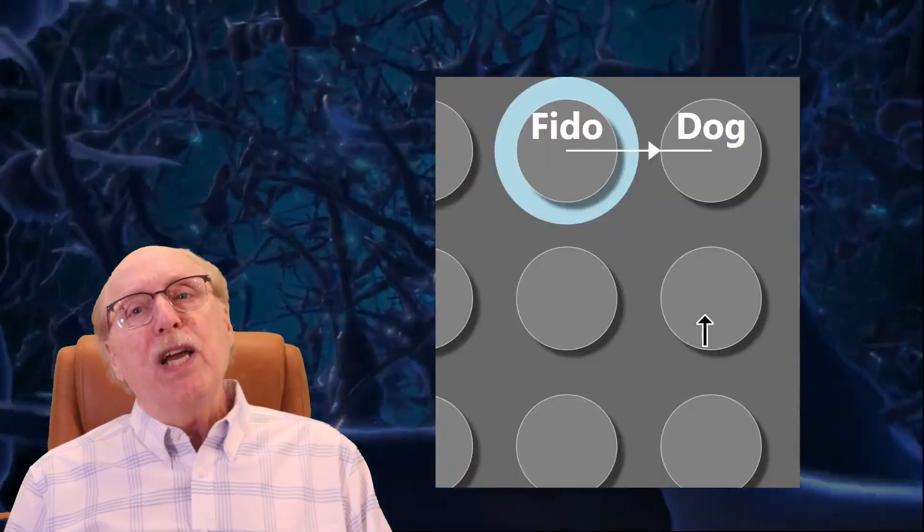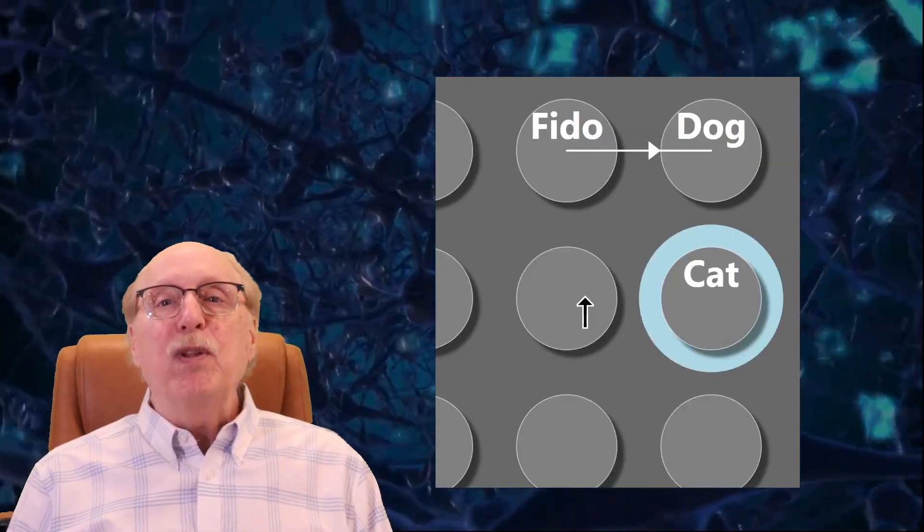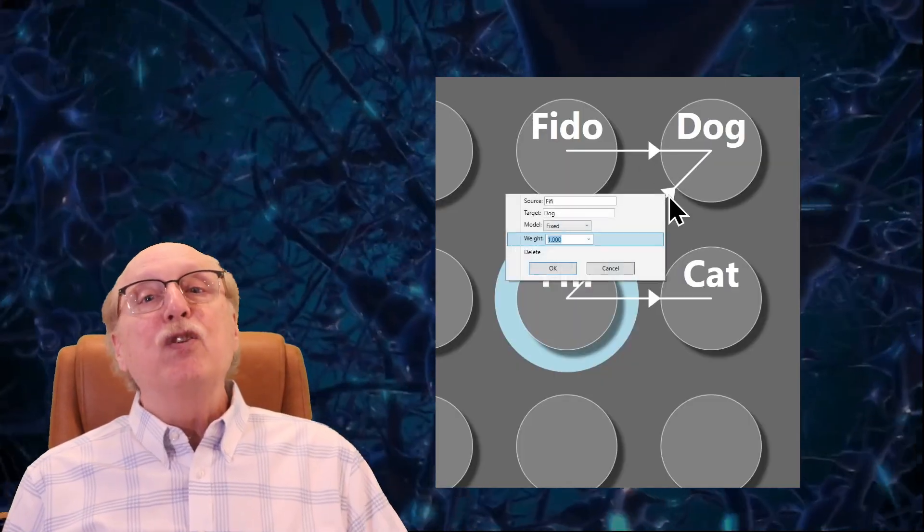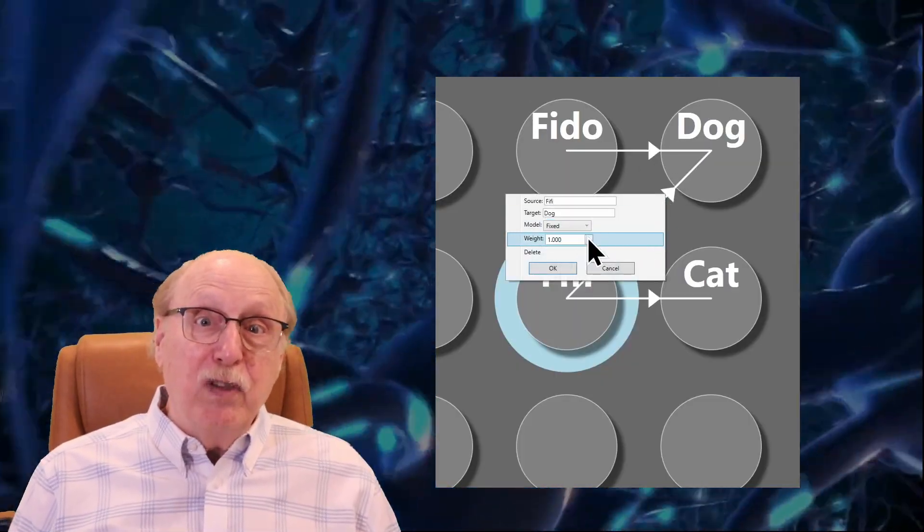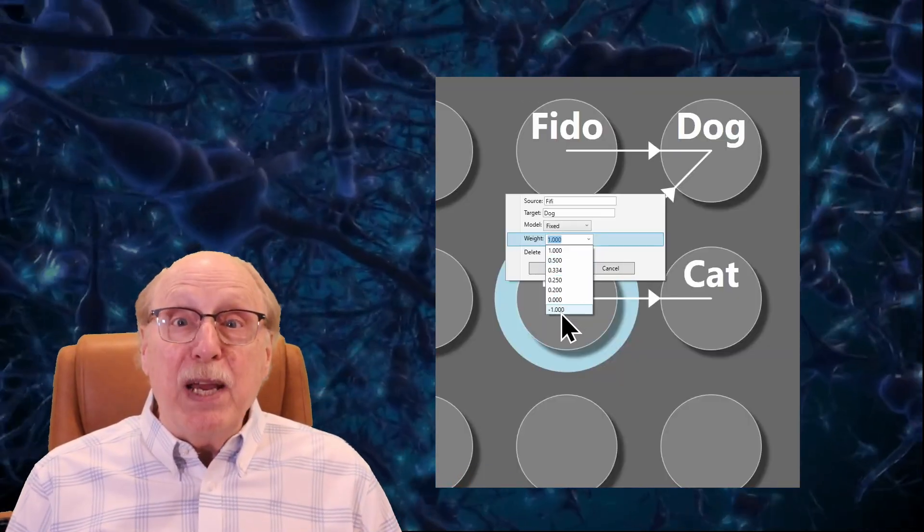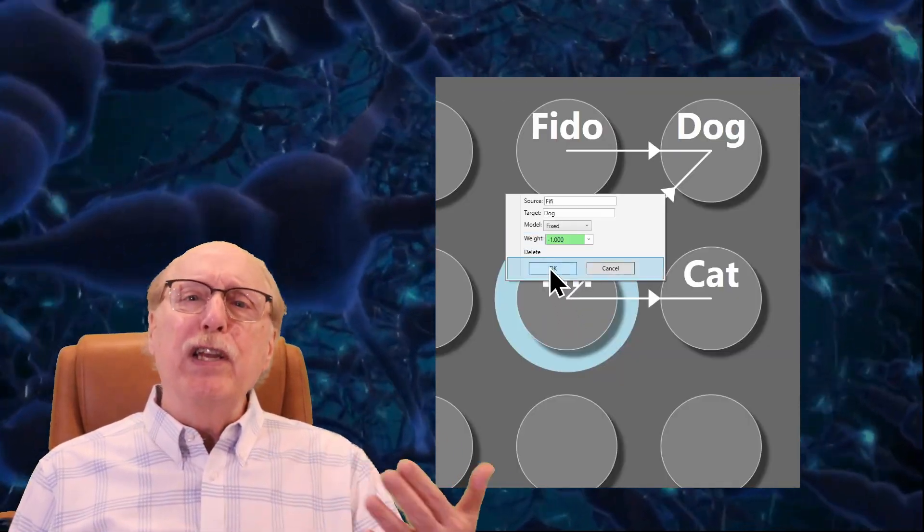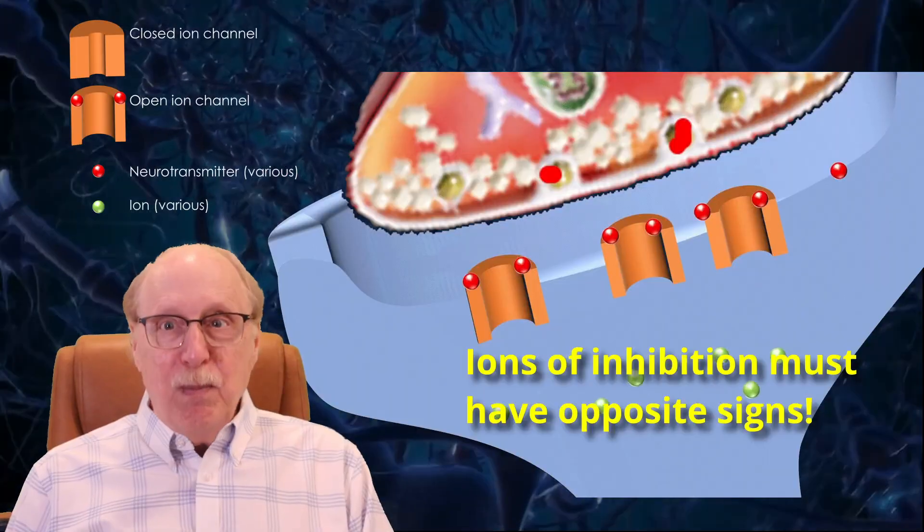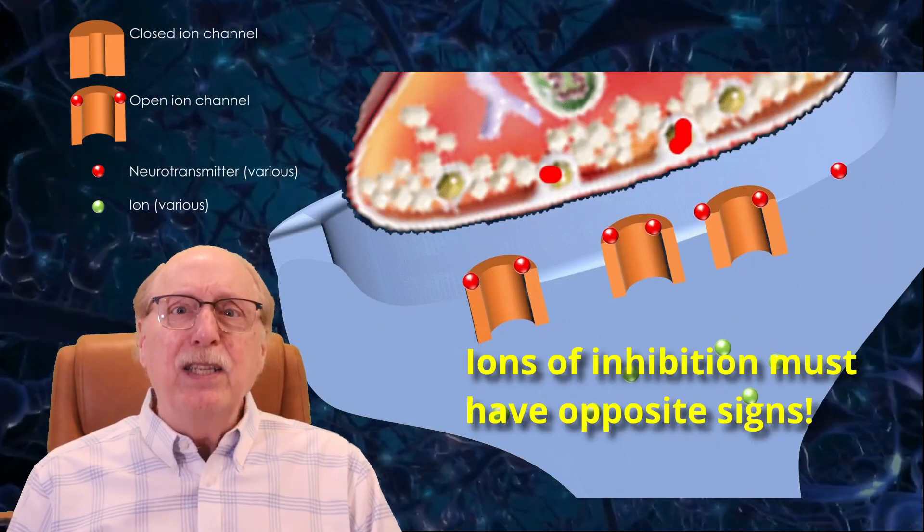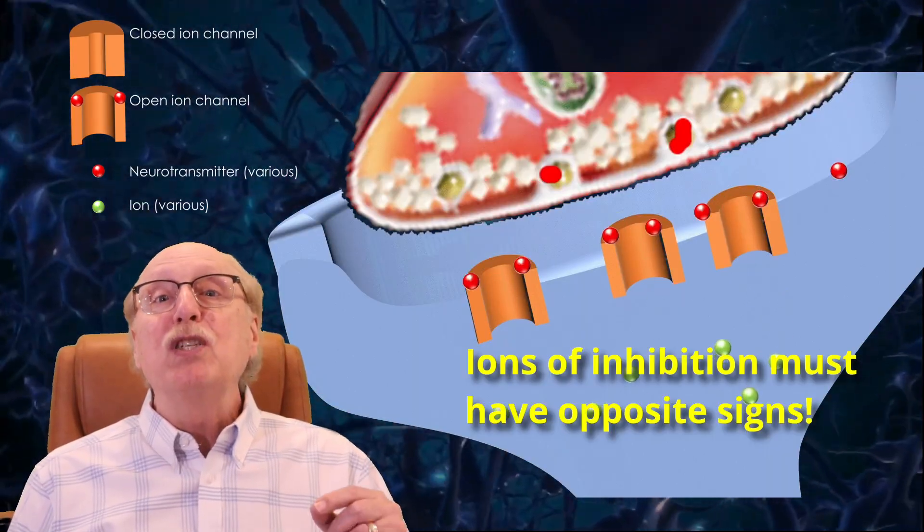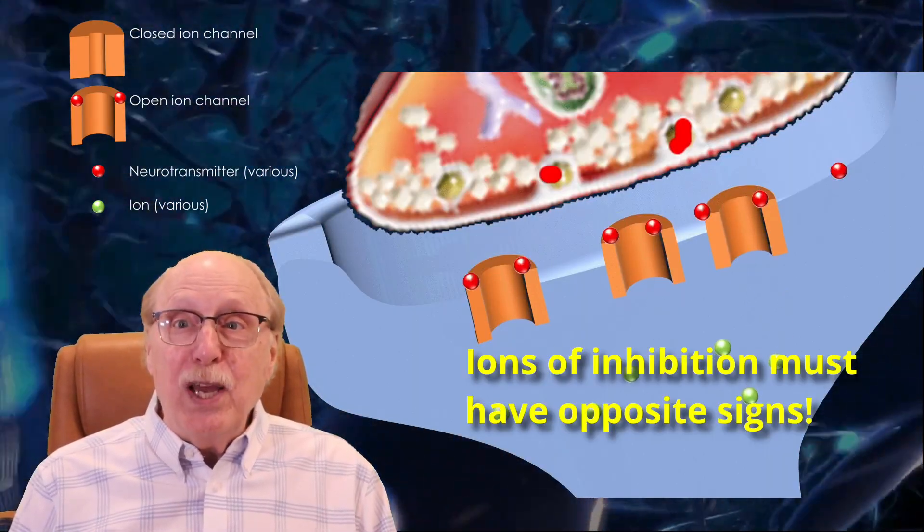Some synapses contribute to the accumulation of charge while others inhibit it. In our simulation, this means simply changing the sign of the synaptic weight from positive to negative, and simulated synapses can glide gracefully from positive to negative weights. In biology, inhibitory synapses must contribute different ions than their excitatory counterparts, and so must be a different synapse type.